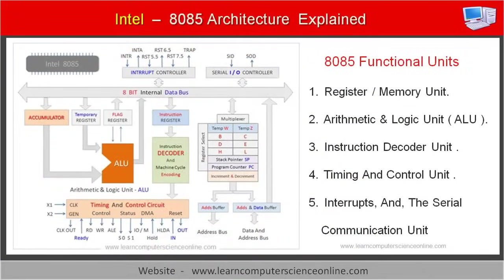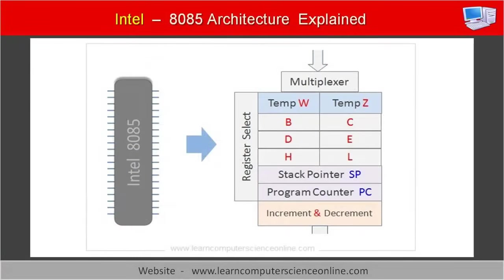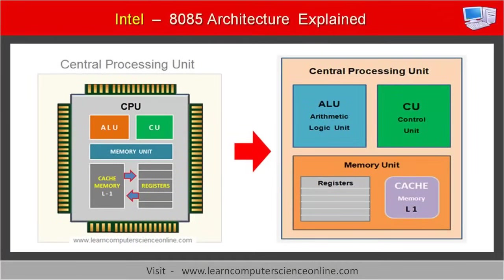Let us now discuss each of the five 8085 microprocessor functional units in detail. Starting with the first unit — the memory unit, also called the register unit. The internal memory of the processor built into the processor chip is called a register. CPU registers are high-speed temporary memory present inside the processor chip, used by the 8085 processor to store data, addresses, and machine instructions during program execution.